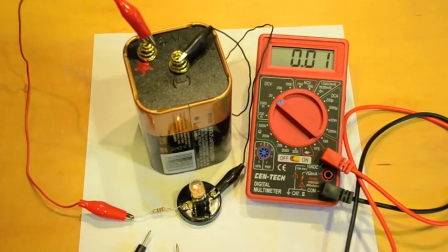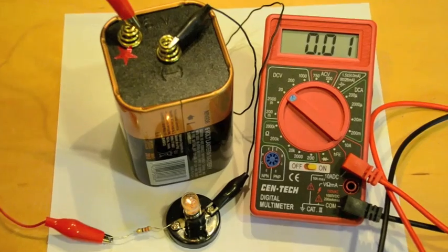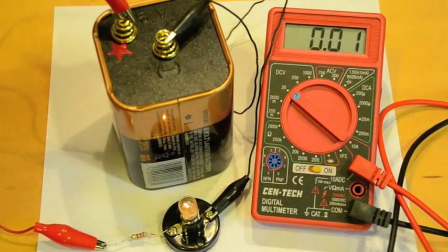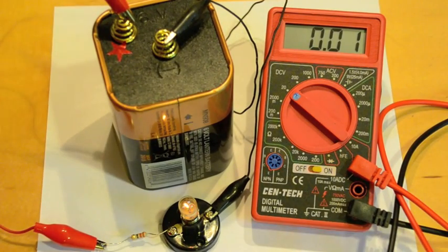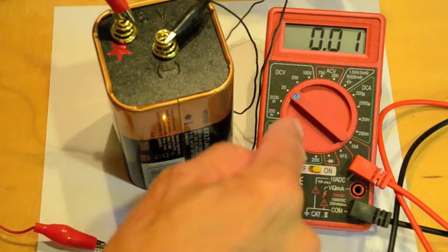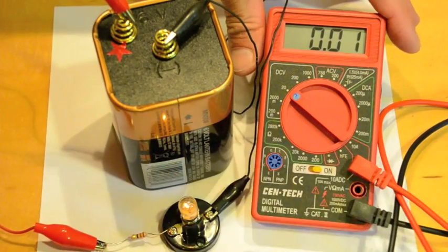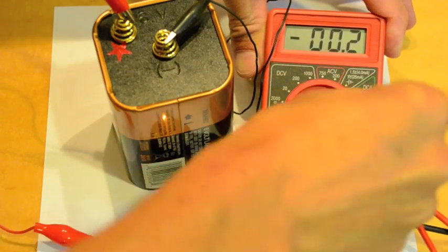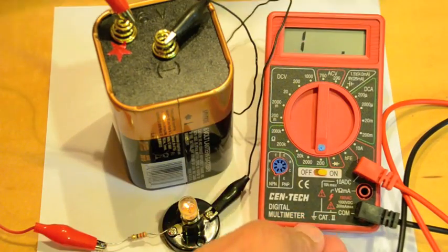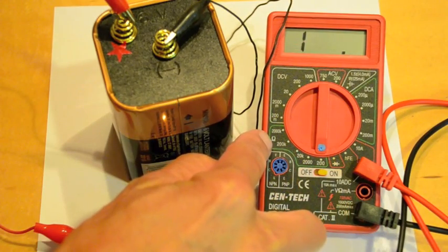And we're going to use this wonderful device which is called a multimeter because it can do many things and we're going to set it up to measure resistance. Now first of all, it's currently set up to measure voltage. So that's actually it's not measuring anything. We have to change the knob setting to one that says ohms, omega.